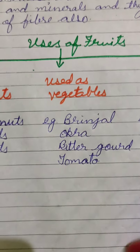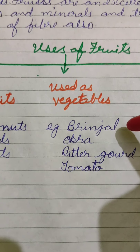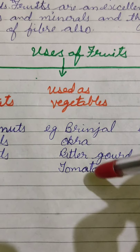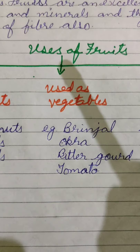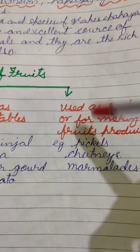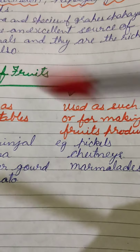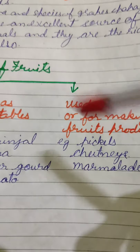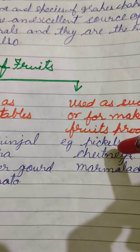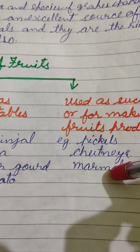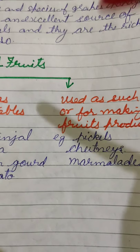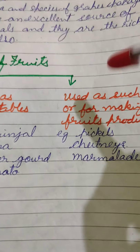Fruits are also used as vegetables — brinjal, okra (ladyfinger), bitter gourd, and tomato are fruits of their plants and are eaten as vegetables. Some fruits are also used for making various fruit products. We make different products from fruits such as pickles, chutneys, marmalades, shakes, and juices.